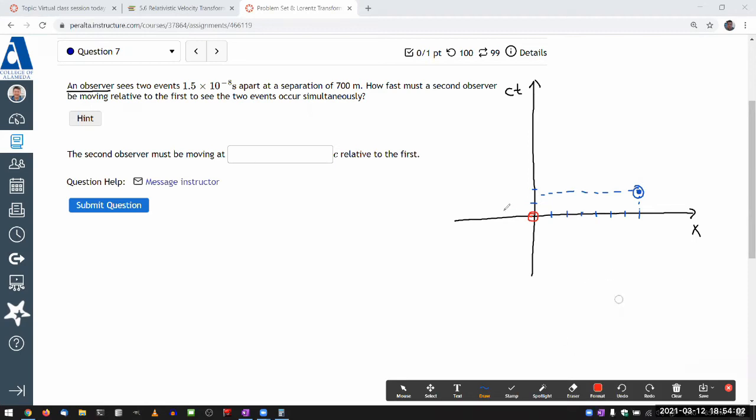These are my events A and, or actually, sorry, yeah, events A and B, and I will use the labels frame S and frame S prime to designate the reference frame. So frame S is my first observer's frame, it's at rest, and the second observer will need to be moving.